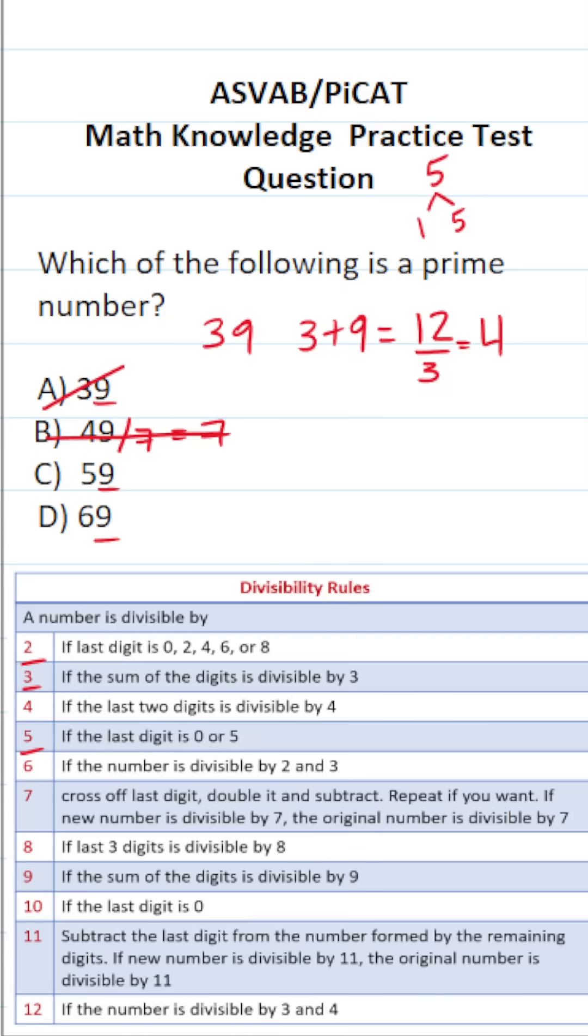Let's take a look at 69. Again, according to the divisibility rule for three, we're going to sum its digits. So we're going to do six plus nine. Six plus nine is 15. Is 15 divisible by three? 15 divided by three is five. Since the sum of the digits in 69 is divisible by three, I know 69 is also divisible by three and can't be prime.